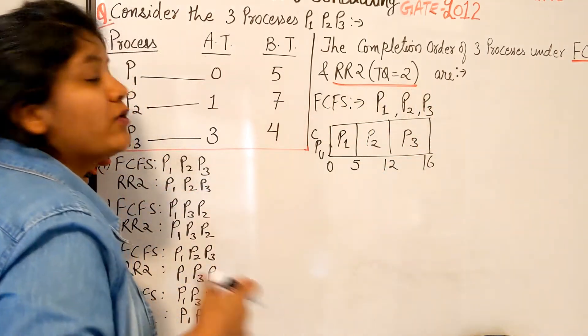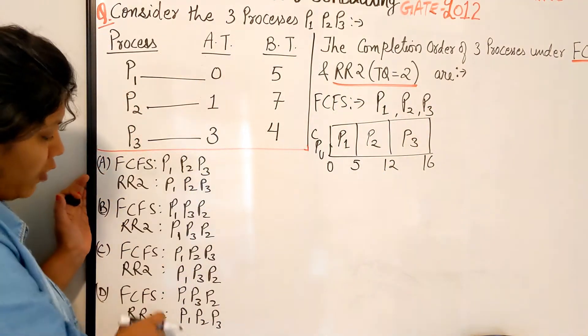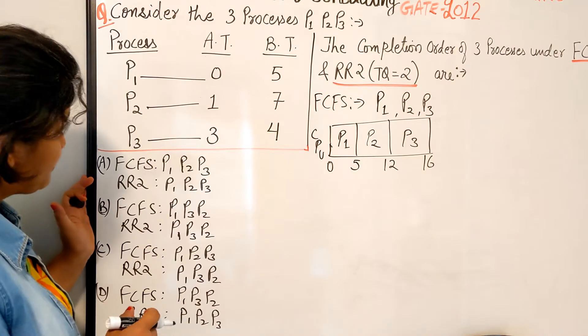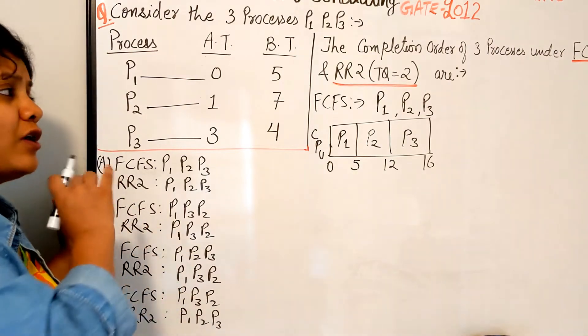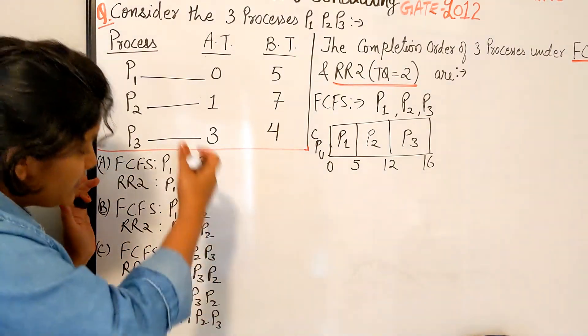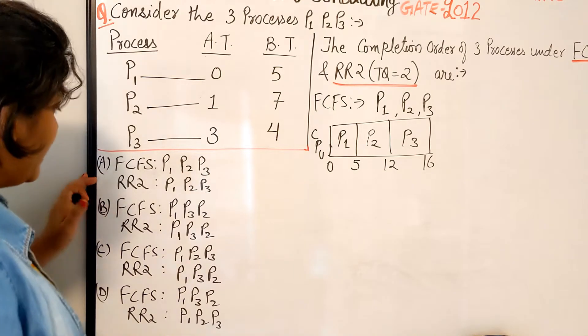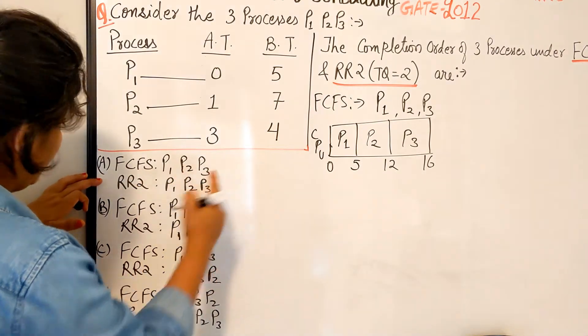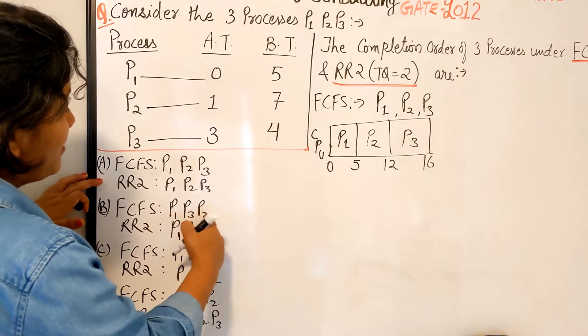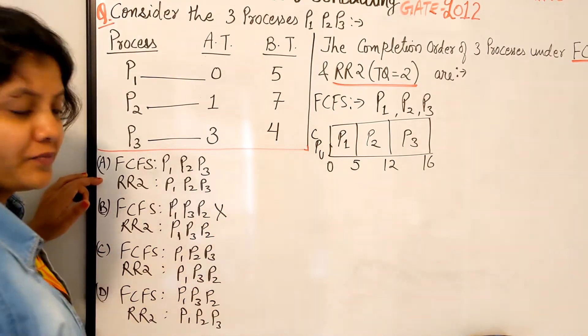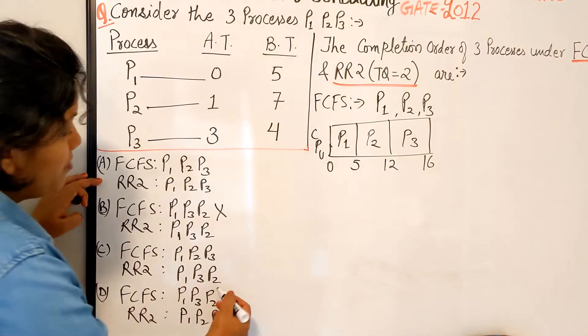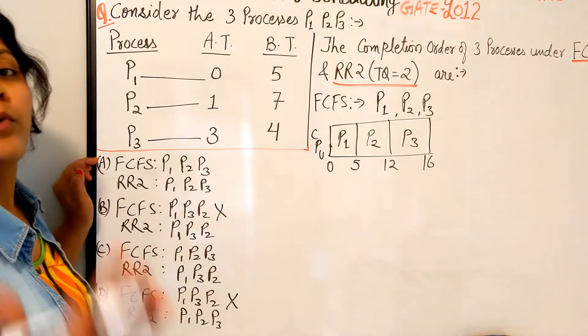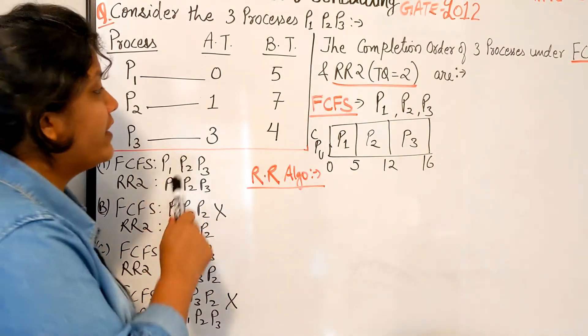Why I mentioned the options right here is because by looking at the options without solving anything in the question, you can just eliminate them. You see option A: FCFS is P1, P2, P3. For B: P1, P3, P2 - not possible. Similarly for D: P1, P3, P2 - not possible at all.